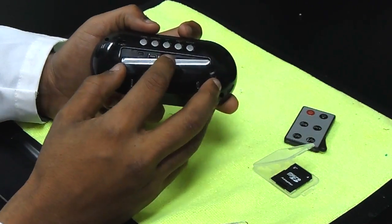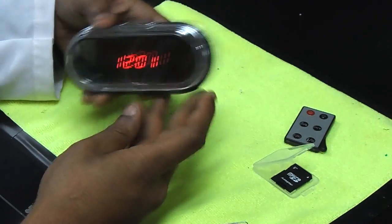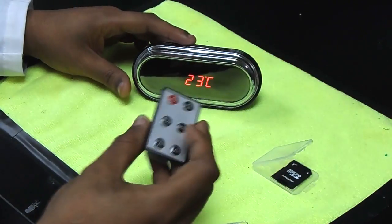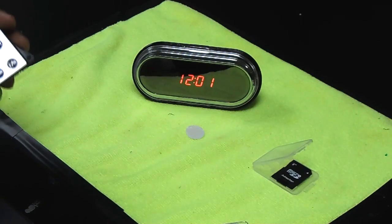Next thing we want to do is test to make sure that we have our microSD card inserted properly and that our clock is reading it. You can turn your clock around and look at the face. Go ahead and grab the remote to your clock and pull out the battery retainer tab.